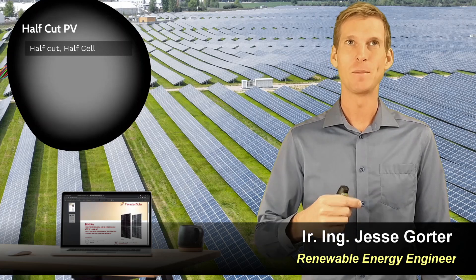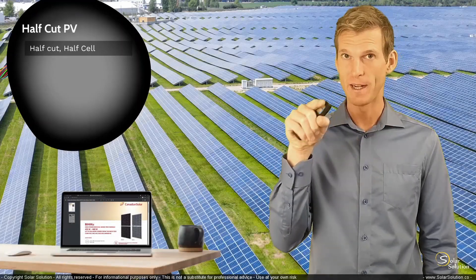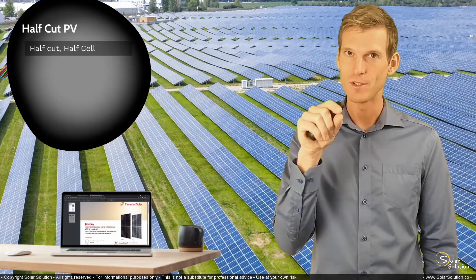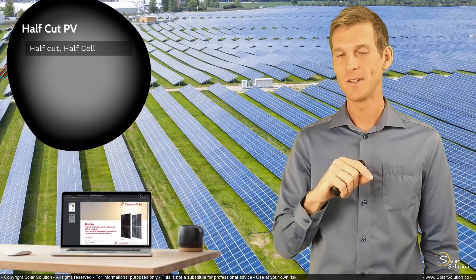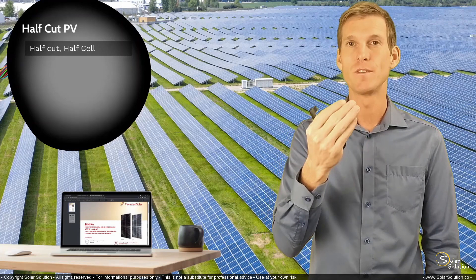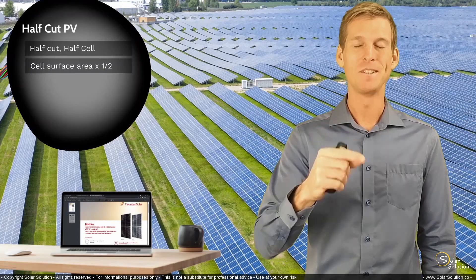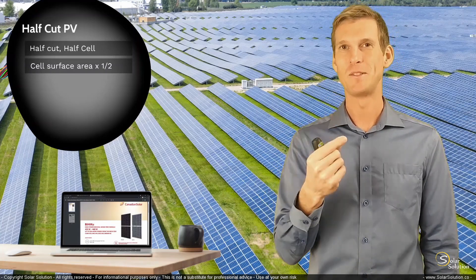We normally refer to them either with the term half-cut or half-cell. We call them that way because we basically take a photovoltaic cell, a square regular cell, we cut it in half so we get two rectangular cells, and thereby we reduce the surface area of the cell by half, so we get half the amount of surface area, and then we double the amount of cells per module.